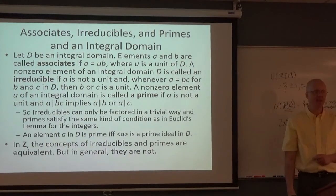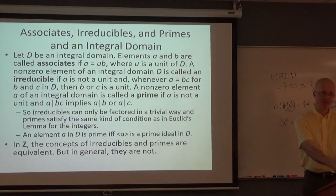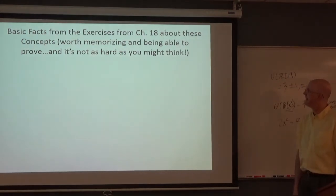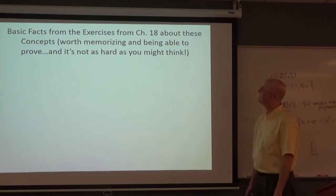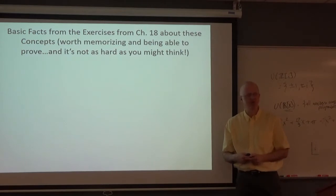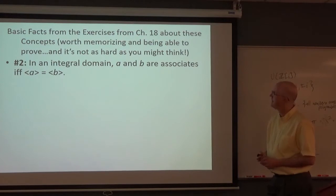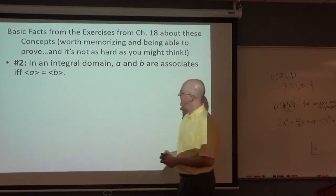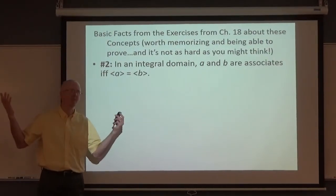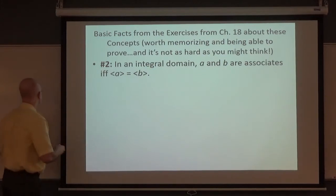Going over the basic facts from chapter 18 again quickly. In an integral domain, A and B are associates if and only if they generate the same principal ideal. The examples mentioned last Friday were like 7 and negative 7, which generate the same principal ideal.